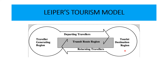Once they come and enjoy the product here in the host country, they return. It's a simple thing. And the transit route region is where the different routes are taken or the ports that they stop at on their way to the TGR or the TDR. Please read up a little bit more on Leiper's tourism model — use your textbook and other resources.